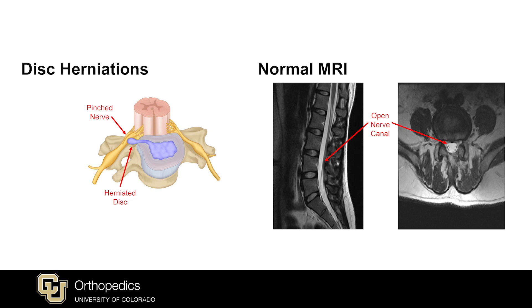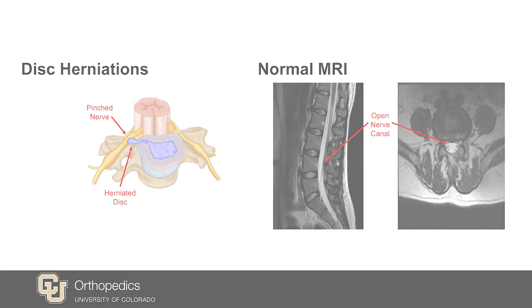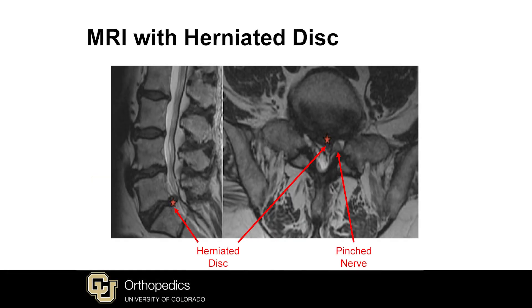Patients may or may not have back pain associated with lumbar radiculopathy, but by definition there is pain somewhere in the legs or in the buttock, groin, or pelvis. This pain is often described as sharp, electric-like, or stabbing, and can be associated with numbness or even weakness.